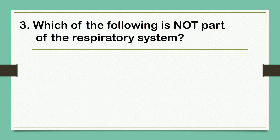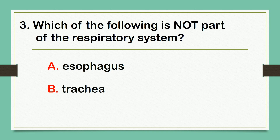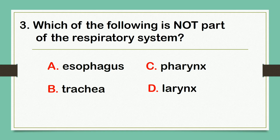Which of the following is not part of the respiratory system? A. Esophagus. B. Trachea. C. Pharynx. Or letter D. Larynx. The correct answer is letter A: Esophagus.